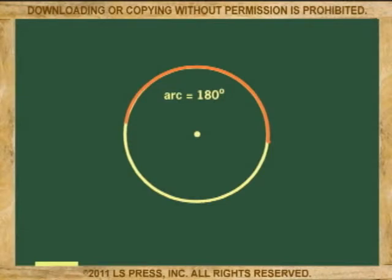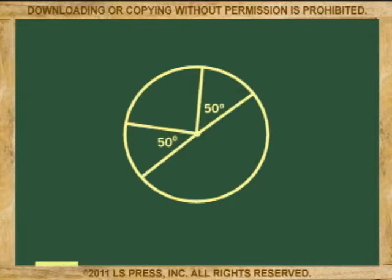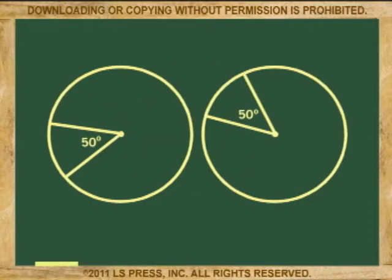If an arc has exactly 180 degrees, it is called a semicircle. Of course, by extension, if in a circle or in two congruent circles, central angles are equal, then the arcs they intercept are also equal.